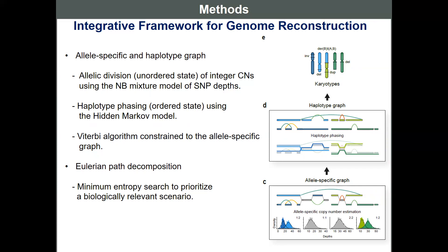Based on population haplotype frequency, we obtain the most probable haplotype using the Hidden Markov Model, and we use the Baum-Welch algorithm constrained to the previous allele-specific graph, so that genomic nodes are fully ordered end-to-end by the BW path. Finally, from the haplotype graph, we find Eulerian paths by enumerating edge-pairing possibilities for each genomic node, and selecting the edge-pairing state with minimum entropy to prioritize biologically relevant scenarios.